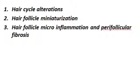These three factors — hair cycle alterations, hair follicle miniaturization, and hair follicle micro-inflammation and perifollicular fibrosis — combine to produce what is called androgenetic alopecia.